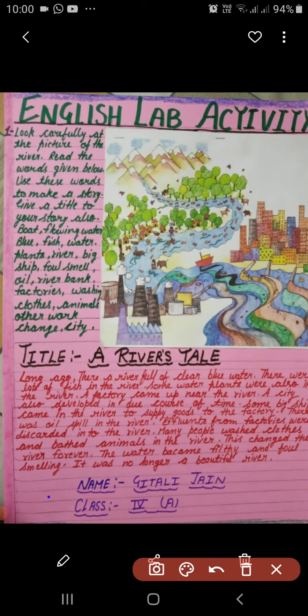There are some mistakes in her work, but I am reading the correct sentences: 'There are a lot of fishes in the river. Some water plants were also in the river. A factory came up near the river. A city also developed in due course of time. Some big ships came into the river to supply goods to the factory.'